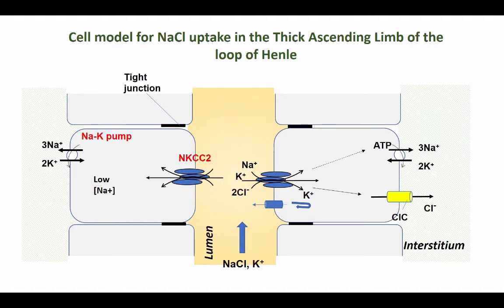To keep everything electroneutral, you will find that two chloride molecules are taken up for every potassium and sodium molecule. This is a very important transporter, also important because it is blocked by one of the most powerful diuretics, namely a loop diuretic, for example furosemide.